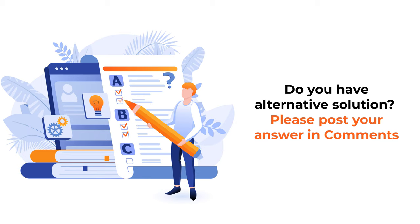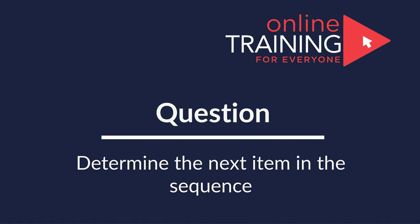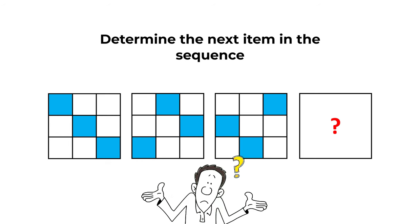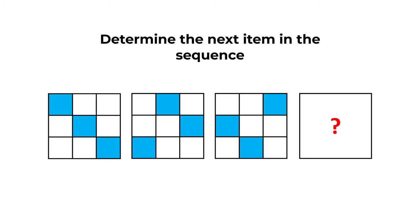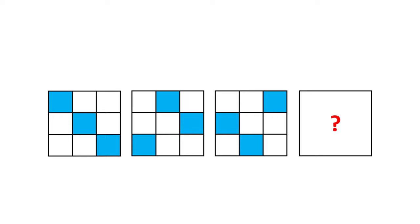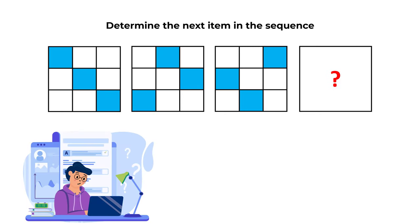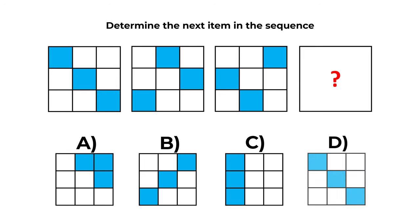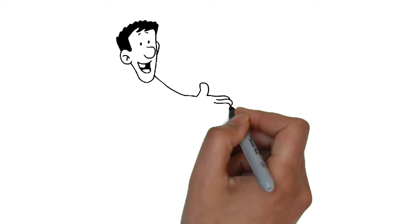Hopefully you've nailed this question and now know how to answer similar problems on the test. Here's an interesting problem: determine the next item in the sequence. You're presented with a sequence of large squares, each containing nine small squares of different colors. You need to determine the next item. You have four choices: A, B, C, and D. Give yourself 10 to 30 seconds to come up with the solution.